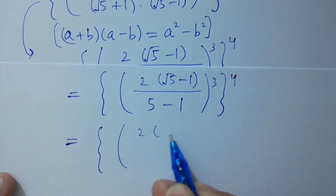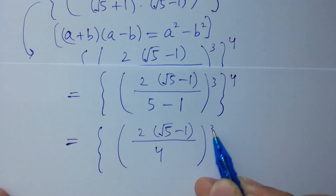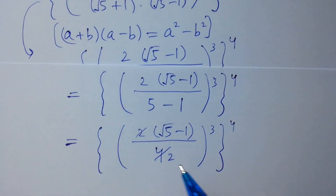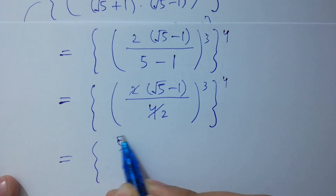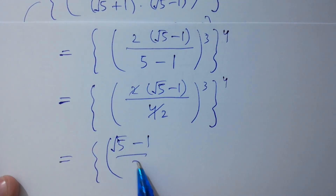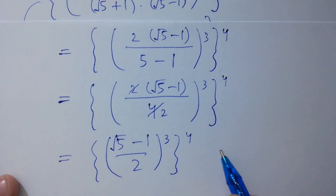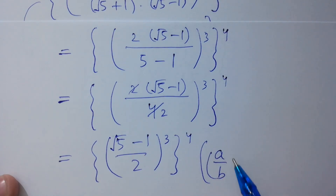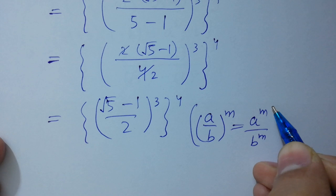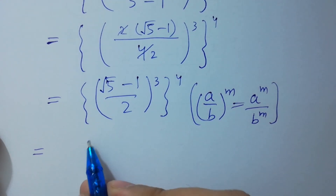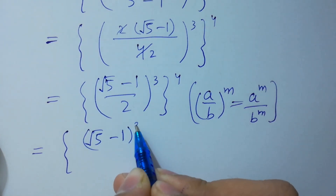We have 2 times square root of 5 minus 1, over 5 minus 1 which is 4, to the power 3, to the whole power 4. Two times 2 is 4, giving square root of 5 minus 1, over 2, to the power 3, to the whole power 4. Using (a/b)^m = a^m / b^m, it equals square root of 5 minus 1 cubed, over 2 cubed, to the whole power 4.